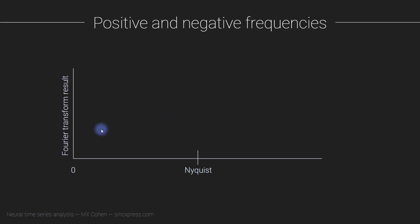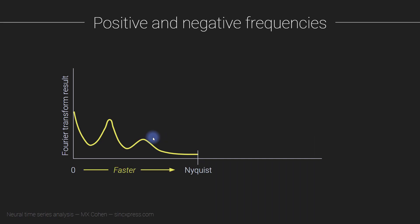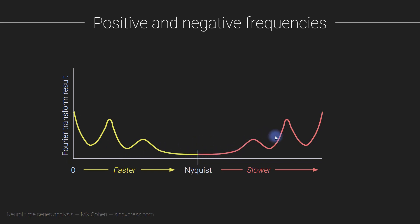If you look at a power spectrum or an amplitude spectrum of a signal, in general, it doesn't just look like a simple plot. If you look at the full spectrum — the entire output of the FFT or the Fourier transform — it's actually going to look something like this, where you have some frequency structure at lower frequencies. And when you get above the Nyquist frequency, towards the right side of the spectrum, you're going to have something that looks like a mirror image of the left side. In fact, it is literally a mirror image.